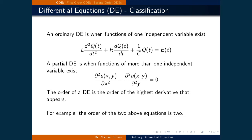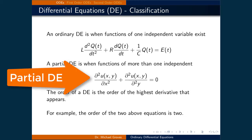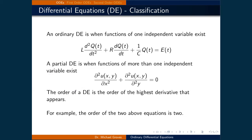This top example is called an ordinary differential equation because it only has one independent variable, which is time T. The second example is a partial differential equation, which represents when there is more than one independent variable — our function U is a function of both X and Y. In that case we have the double derivative with respect to X plus the double derivative with respect to Y, which is why it is a partial differential equation.